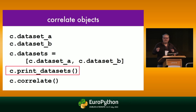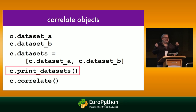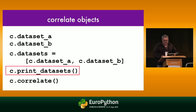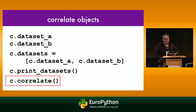Sometimes I discover I've been inputting my data wrong — like breaking up strings into individual characters. Correlate still does a good job even in that case, but print datasets shows you what your data looks like from Correlate's perspective. Finally, the Correlate method itself does the actual correlation, and we'll look at that more in a second.